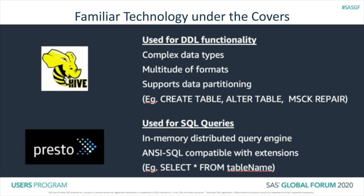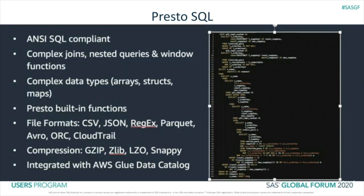Athena is a familiar technology under the covers. Users can still use the DDL capabilities of create or alter table, have support for multiple data types and formats, and it supports data partitioning which allows for improved and faster access to the data in S3. It uses the in-memory distributed engine of Presto, which is pretty much the same as writing standard SQL code. Users can see examples of how Presto SQL can be written — it provides the same capabilities of standard SQL such as joins, nested queries, and windowing functions, and supports multiple file formats such as arrays, structures, and maps. File formats such as Parquet, Avro, and ORC are also supported in addition to CSV and JSON. And ultimately, it has strong integration with the AWS Data Catalog.